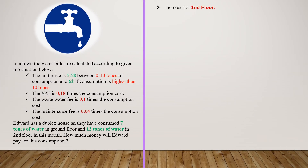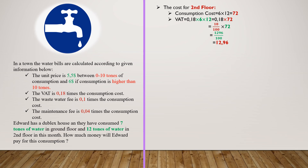Let's calculate the cost for the second floor. We should first calculate the consumption cost, which is 6 times 12, which is equal to 72. The VAT is 0.18 multiplied by consumption cost. We know that 0.18 is 18 divided by 100. If we multiply these numbers, we will have 1296 divided by 100, which is 12.96 in decimal form.